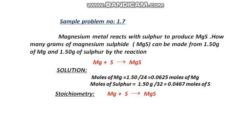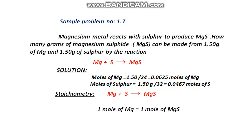Now the second step — stoichiometry of the balanced chemical equation. As we did in the previous problem, when we have one mole of magnesium, one mole of magnesium sulfide is produced. But now we need to determine: when we have 0.0625 moles of magnesium — the value we determined by converting grams to moles — how much magnesium sulfide will be produced?